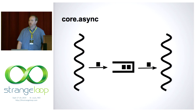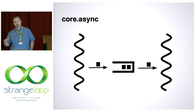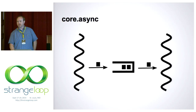Core async is a Clojure concurrency library. All the work and all my slides are talking about the Clojure, the proper Clojure version of these things, not the ClojureScript version, just because that's the context I'm working in.